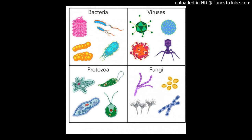Bacteria are single-celled organisms. They are the most widespread living things on our planet Earth. Some bacteria need oxygen to survive and others do not. Some love heat while others prefer a cold environment. Most bacteria aren't dangerous for humans. Many of them live on or in our body and help us to stay healthy. They also help the immune system by fighting germs. They can be rod-shaped, round-shaped or spiral-shaped.